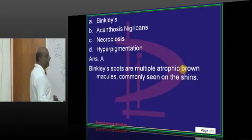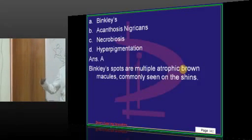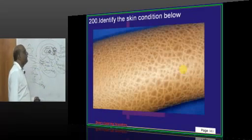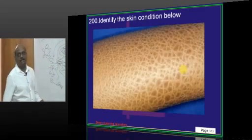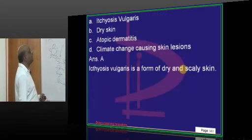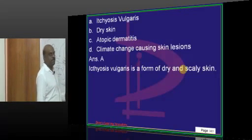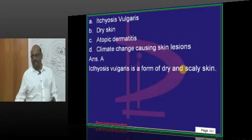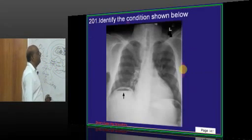Multiple atrophic brownish macules found on the shins of people is what you need to recognize. Now what is this typical skin condition? It is ichthyosis vulgaris, which is dry and scaly skin.